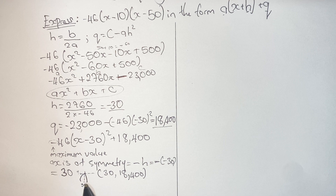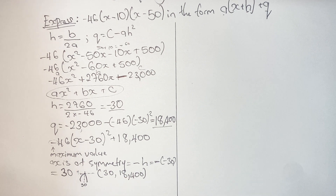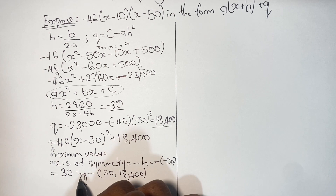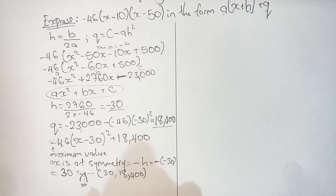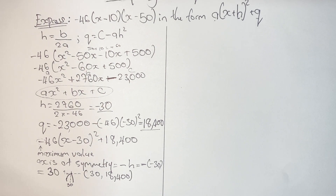I wrote down this information but went below the camera, so I'm just going to push the paper up. Your axis of symmetry is your additive inverse of H — a negative and a negative gives you a positive, so the axis of symmetry equals 30. The coordinates of the maximum value are (30, 18400). The axis of symmetry is 30 and the maximum value is 18,400.